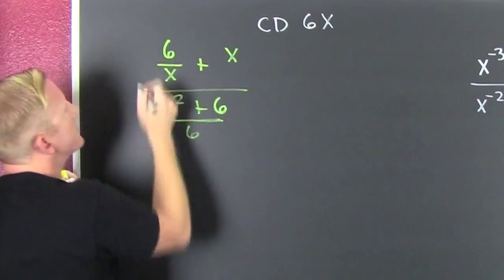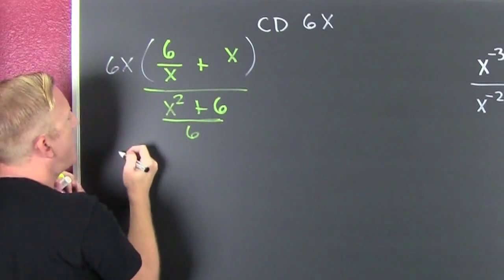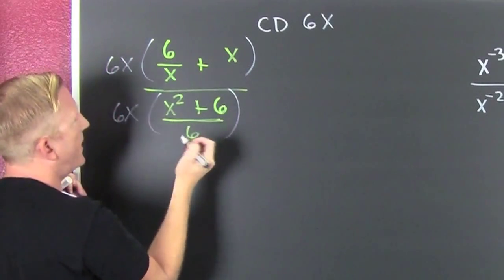What's next? I'm going to multiply top and bottom by that common denominator. So that's a 6x times the top and a 6x times the bottom.